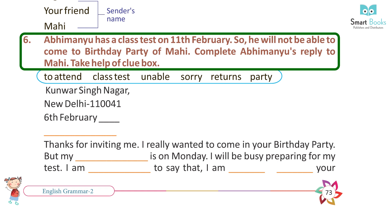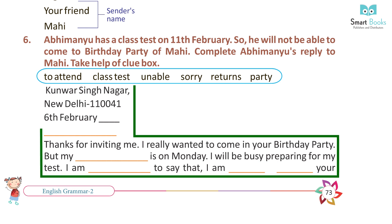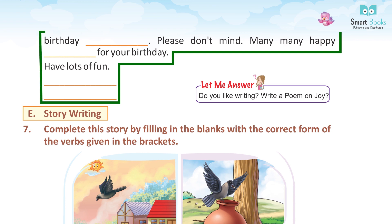Abhimanyu has a class test on 11th February, so he will not be able to come to Mahi's birthday party. Complete Abhimanyu's reply to Mahi. Take help of the clue box. Coursing Nagar, New Delhi - 110041. 6th February. Thanks for inviting me. I really wanted to come to your birthday party, but my class test is on Monday. I will be busy preparing for my test. I am sorry to say that I am unable to attend your birthday party. Please don't mind. Many many returns of the day. Have lots of fun. Regards, Abhimanyu.